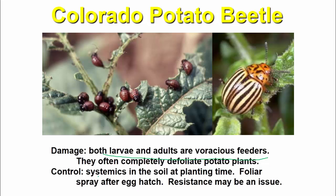For control of the Colorado potato beetle: apply systemic insecticides to the soil at planting time and use foliar spray after egg hatch. Resistance may be an issue and can develop in this pest.